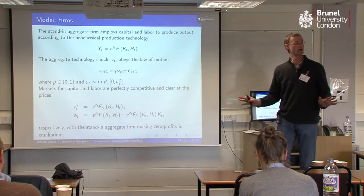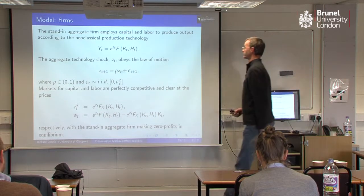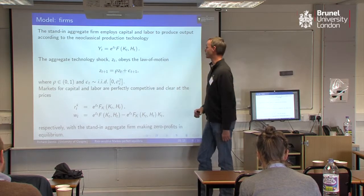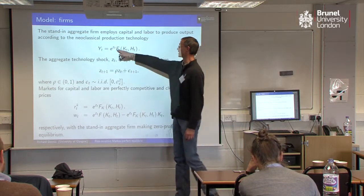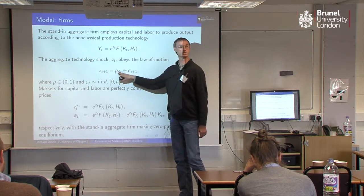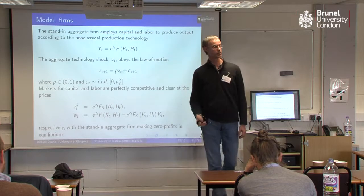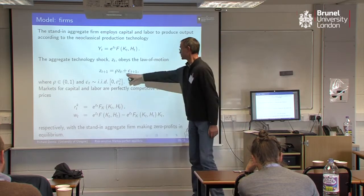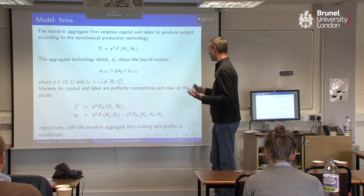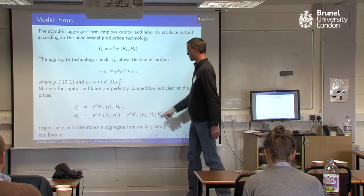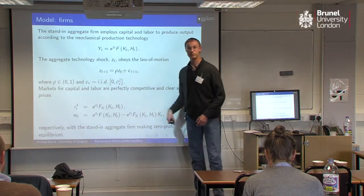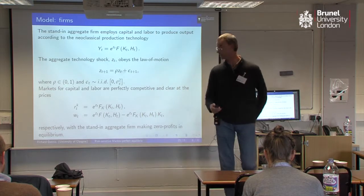On the firm side, it's going to be a static problem — pretty standard. We're going to have a neoclassical production function; it'll be Cobb-Douglas when I solve the model. We've got a technology shock that's going to follow an AR(1) process — here it's a stationary process, but later on I'm going to introduce the case where this is a random walk, i.e., permanent technology shocks. Perfectly competitive markets for capital and labour, so the rental rate on capital and the wage rate are just given by the standard expressions.